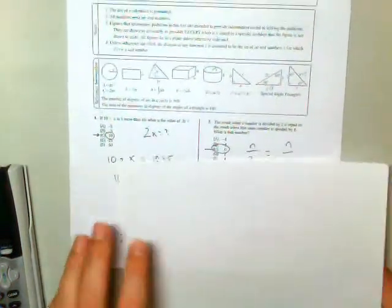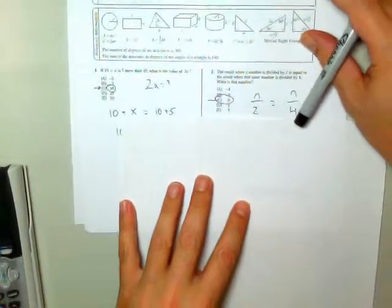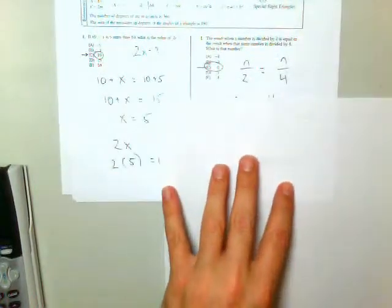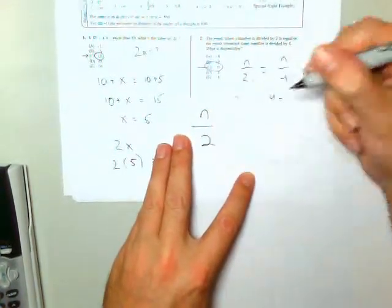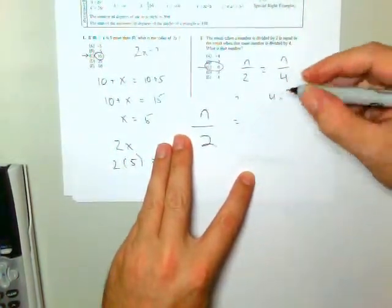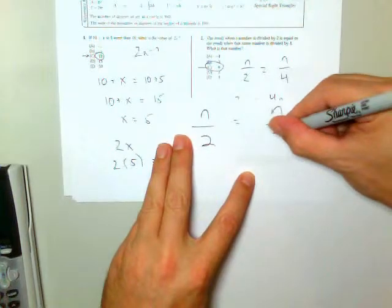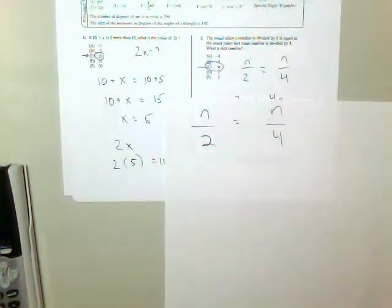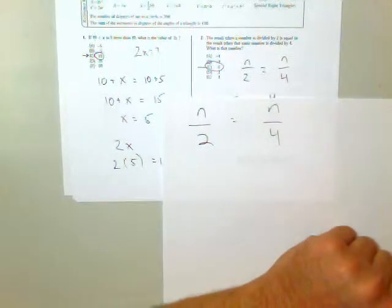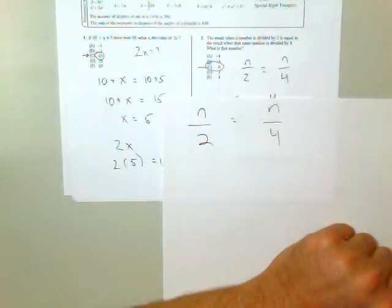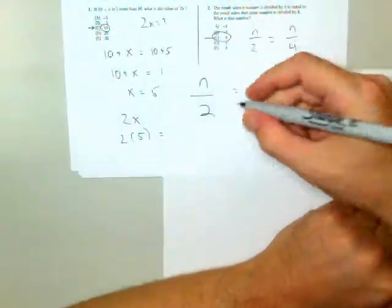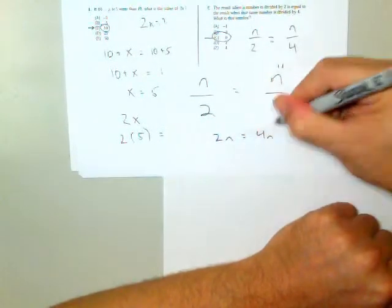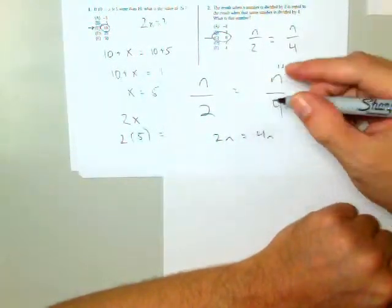Number two says, the result when a number, let's call it n, is divided by 2 is equal to when the same number is divided by 4. What is that number? Well, there's only one number that I can divide by two different integers or any rational number and get the same result. That number is 0, which is choice C. If I go ahead and cross multiply, I'll get something like 2n equals 4n.